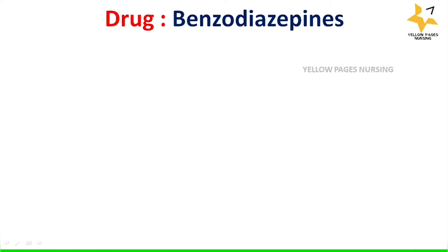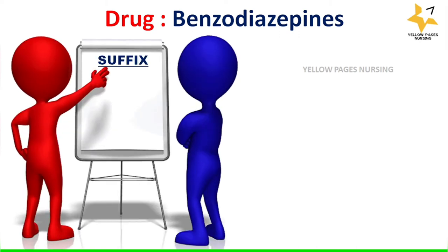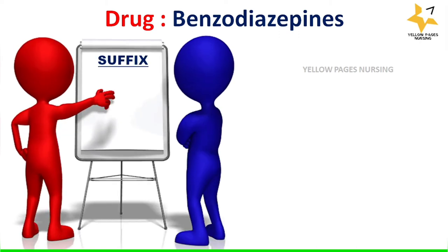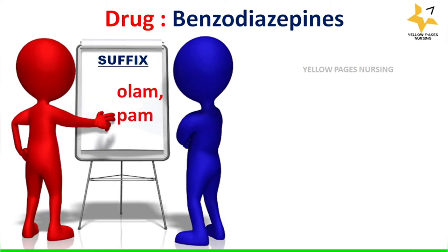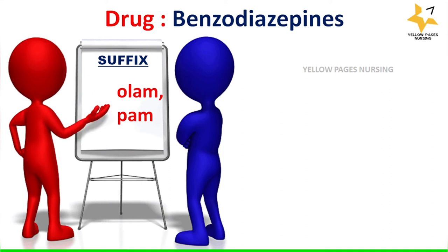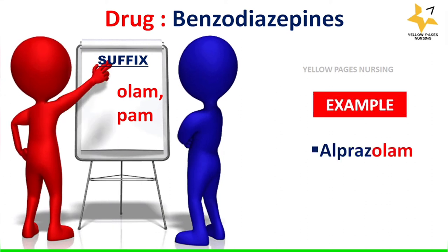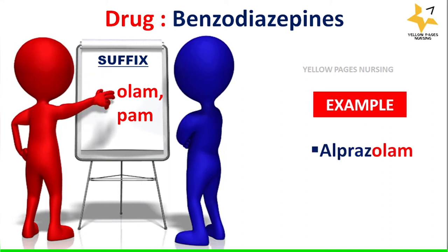Next comes benzodiazepines, with the suffixes '-olam' and '-pam'. Examples are alprazolam, lorazepam, etc.